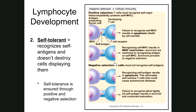The next step is negative selection. What we don't want is a cell that, while able to recognize the class I MHC and bind to it like a lock and key, is also binding to the self-antigen like a lock and key. This is not something we want — because if this cell goes out into the body, it will work to destroy cells that are displaying self-antigens. Any cell that does this is going to undergo apoptosis, because it would not be a good immune system cell — it would attack and destroy your own body cells.